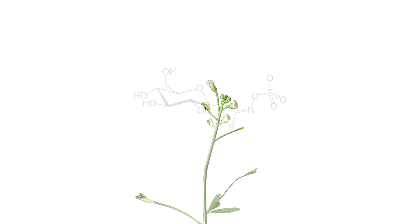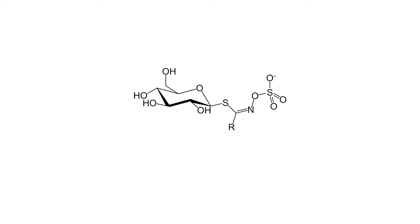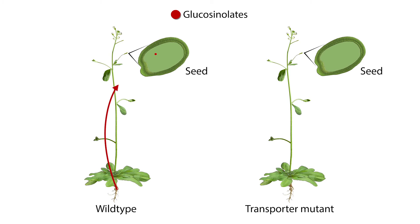Our goal is to understand how plants orchestrate their allocation of defense compounds through transport processes. We use the plant Arabidopsis with the defense compounds glucosinolates as a model system. Recently, we identified two transporters that, when eliminated from the genome, resulted in a plant with no glucosinolates in the seeds.